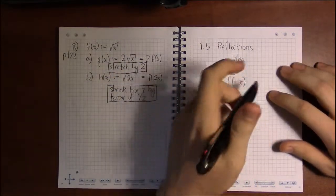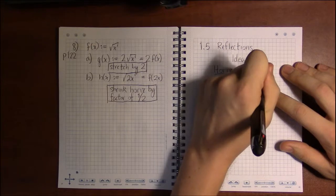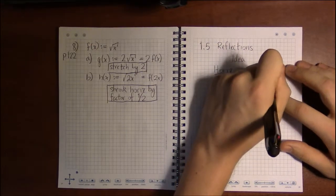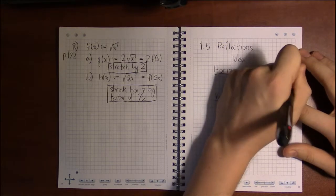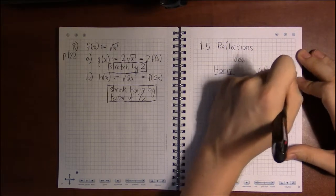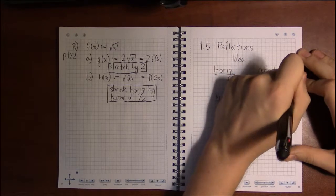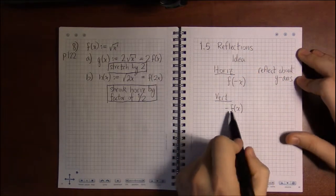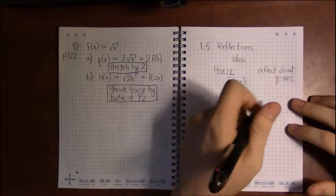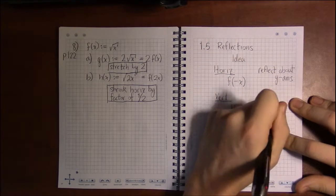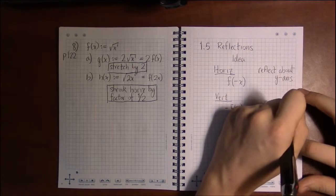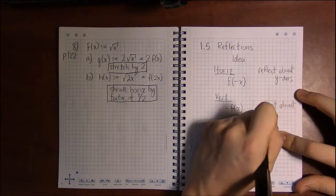So another way to say a horizontal reflection is a reflection about the y-axis, and the other way to say a vertical transformation is as a reflection about the x-axis.